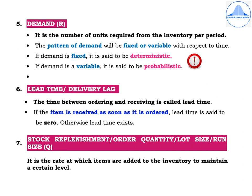The demand is denoted by R. It is the number of units required from the inventory per period. The pattern of demand will be fixed or variable with respect to time. If the demand is fixed, it is said to be deterministic; if the demand is variable, it is said to be probabilistic.